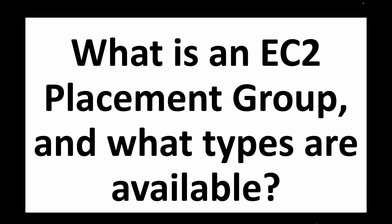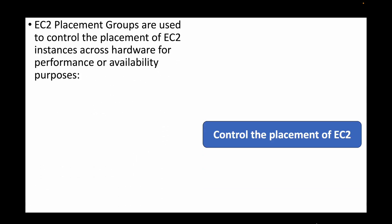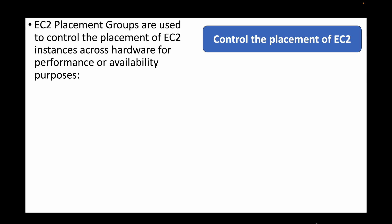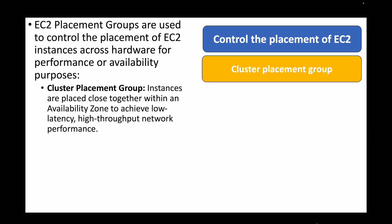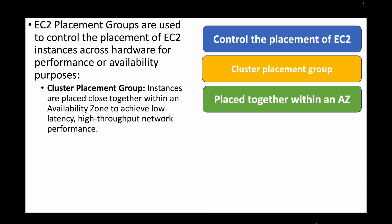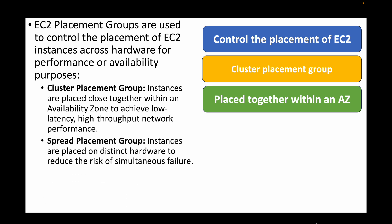The next question is: what is an EC2 placement group and what types are available? Placement groups can be used when you want to control the placement of your EC2 instances — it allows you to control on which hardware instances will be placed within the availability zone. Under this we have the cluster placement group, where all instances are part of a cluster within one single availability zone, used when you want low latency or high throughput network performance.